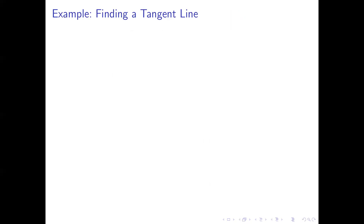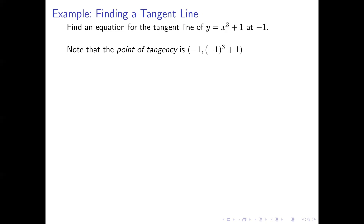Let's look at another example where we find an equation for a tangent line. We'll find an equation for the tangent line of y = x³ + 1 at the point where x = −1. To find an equation for a line we need a point and a slope. The point of tangency is where x = −1; plugging −1 into our function gives y = (−1)³ + 1 = 0, so the point is (−1, 0).